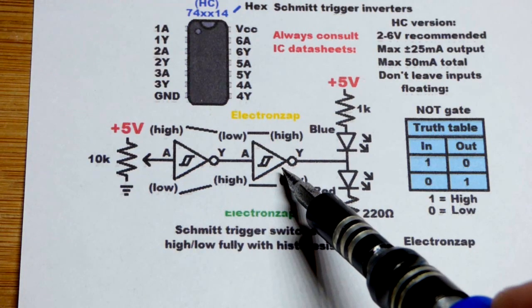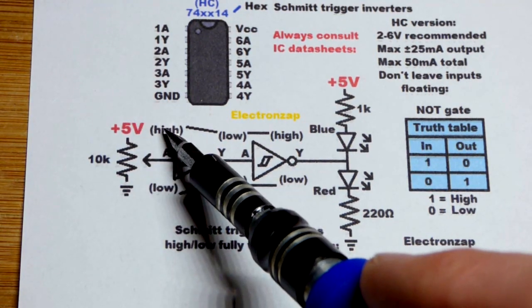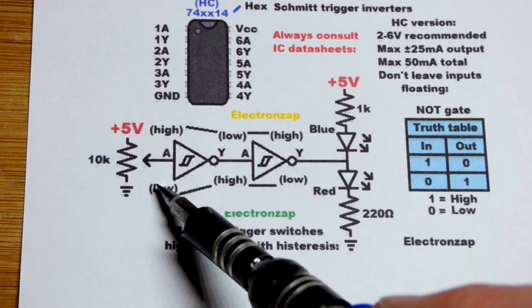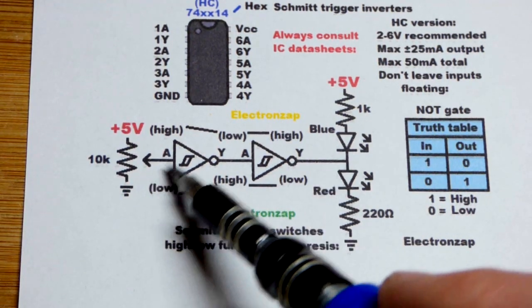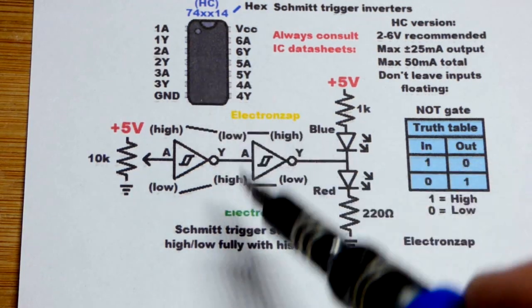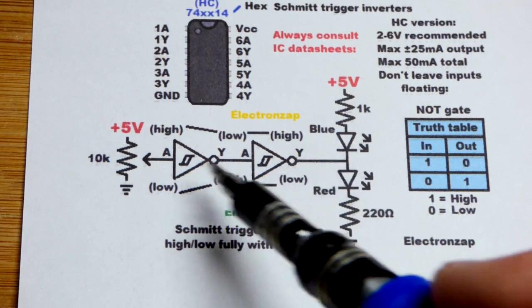We're going to take these inverters and turn them into a buffer. So if we have a high input, we'll have a high output. A low input, we'll have a low output. We're inverting it and then feeding it to another one so it gets inverted again.